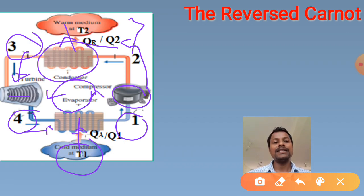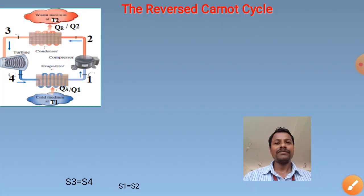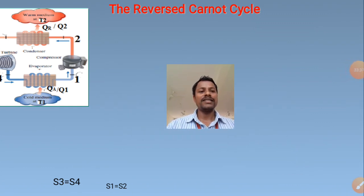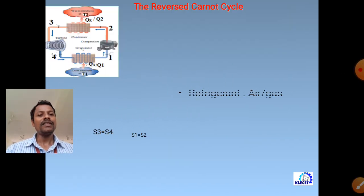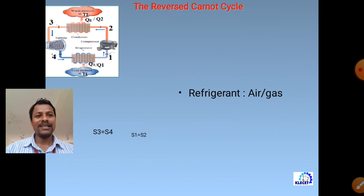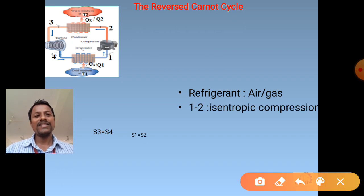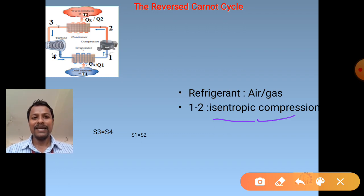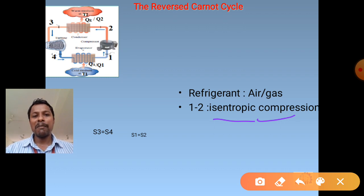COP: the desired effect (cooling effect in the refrigerated space) divided by the required input (work input to the compressor) gives Q/W. Relative COP: when the cycle operates theoretically, we calculate the theoretical COP; when it operates with actual conditions including losses, we get the actual COP. The ratio of actual COP to theoretical COP is called relative COP.